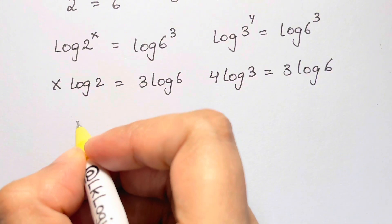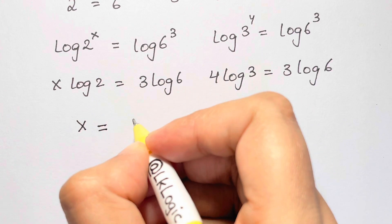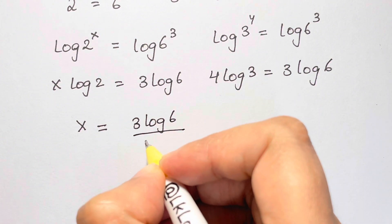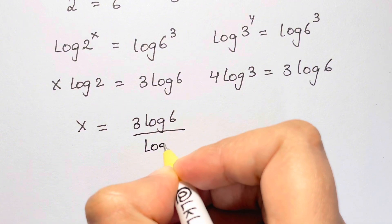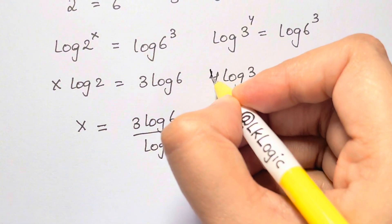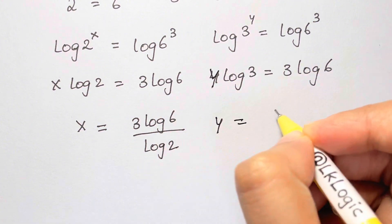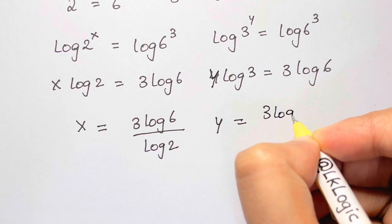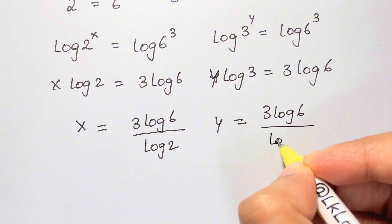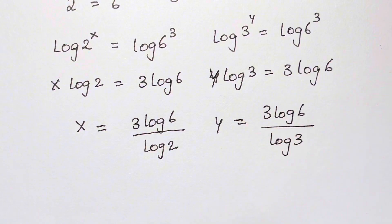From here we can get x: x is equal to 3 log 6 over log 2. And here we can get y: y is equal to 3 log 6 over log 3, dividing both sides by log 3.